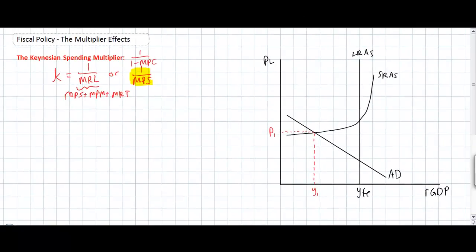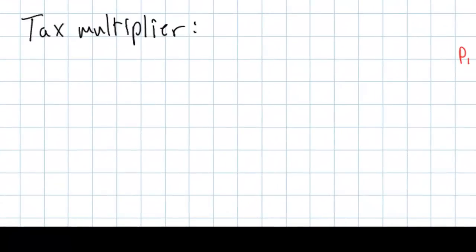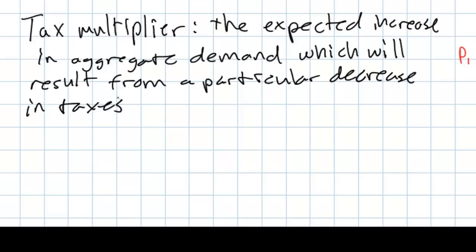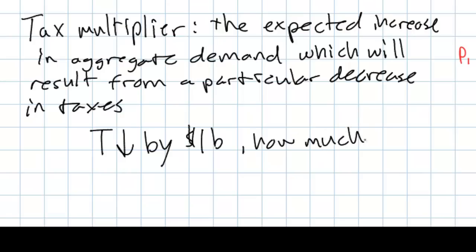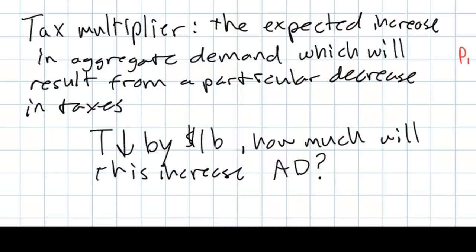Today we're going to be talking about how a change in the tax rate in a nation can affect aggregate demand by calculating what's known as the tax multiplier. The tax multiplier is defined as the expected increase in aggregate demand which will result from a particular decrease in taxes. The multiplier effect works in both directions, so we could also ask how much would aggregate demand decrease following a one billion dollar increase in taxes.